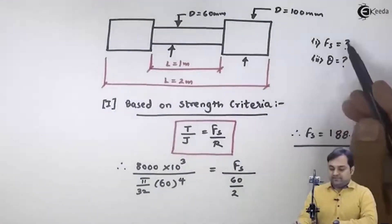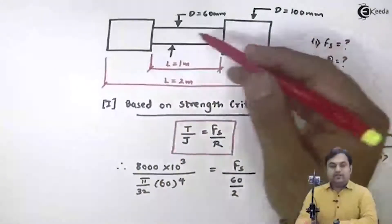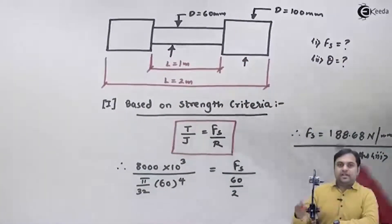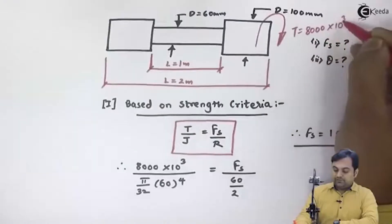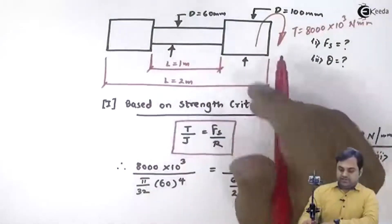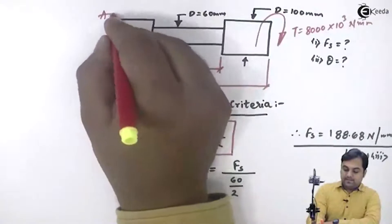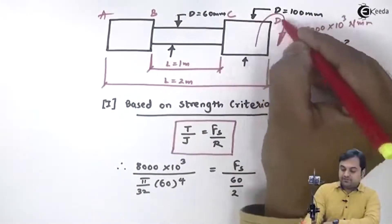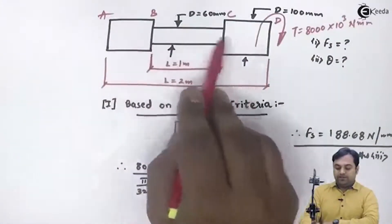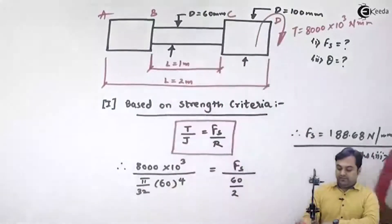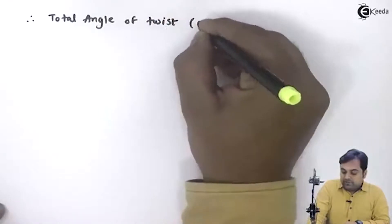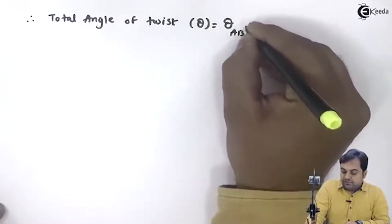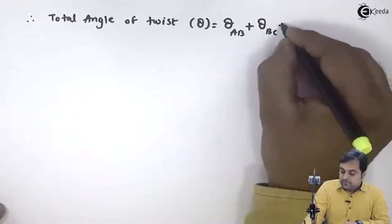Next, we have found the shear stress. Now we calculate the angle of twist. This shaft is like shafts in series with various diameters. The torque applied at the end is 8000 × 10³ N·mm. I divide the shaft into three portions: AB, BC, and CD. The total angle of twist θ = θ_AB + θ_BC + θ_CD.